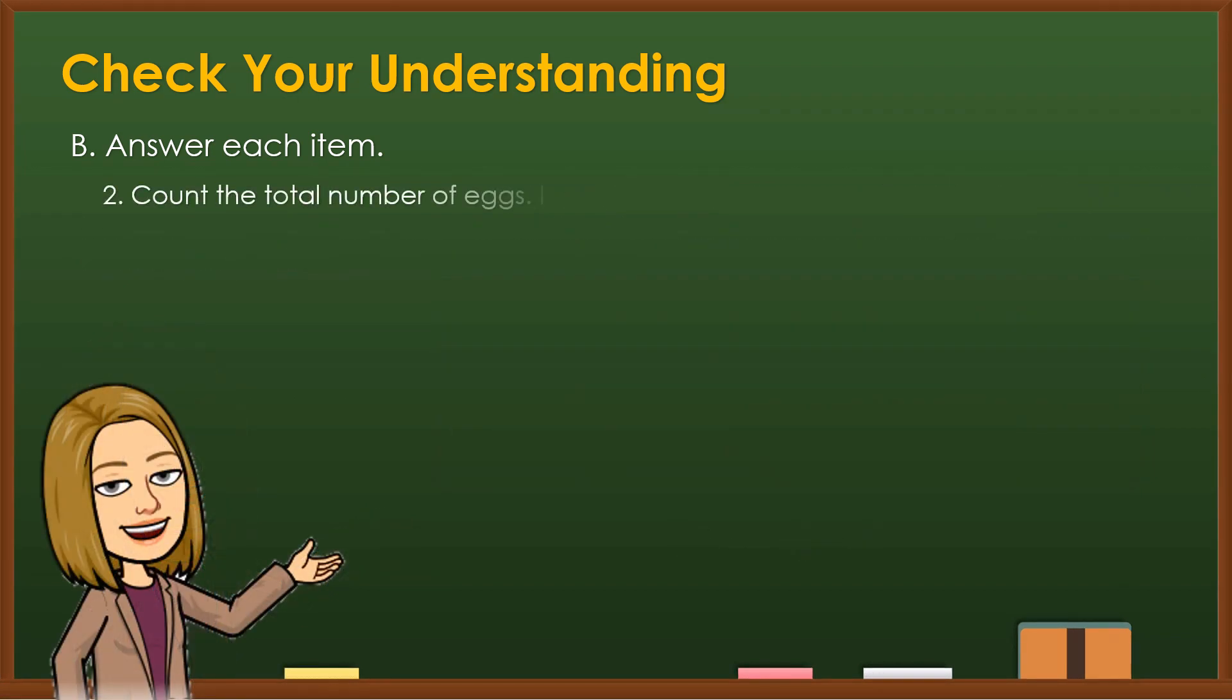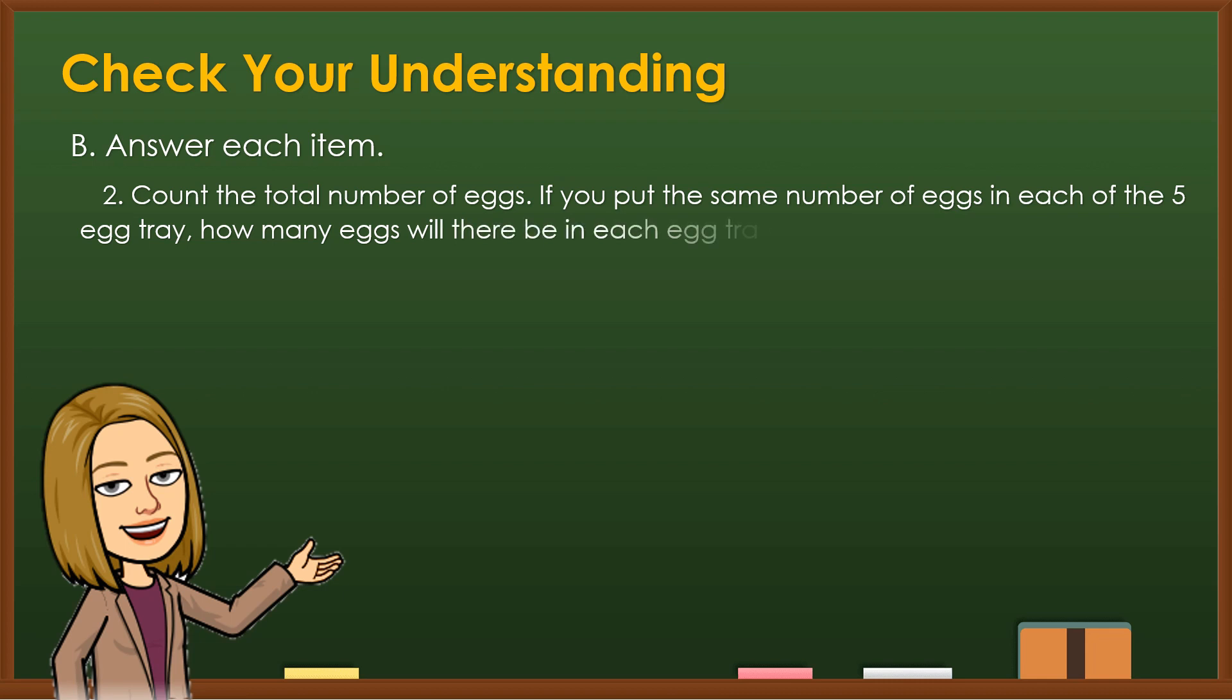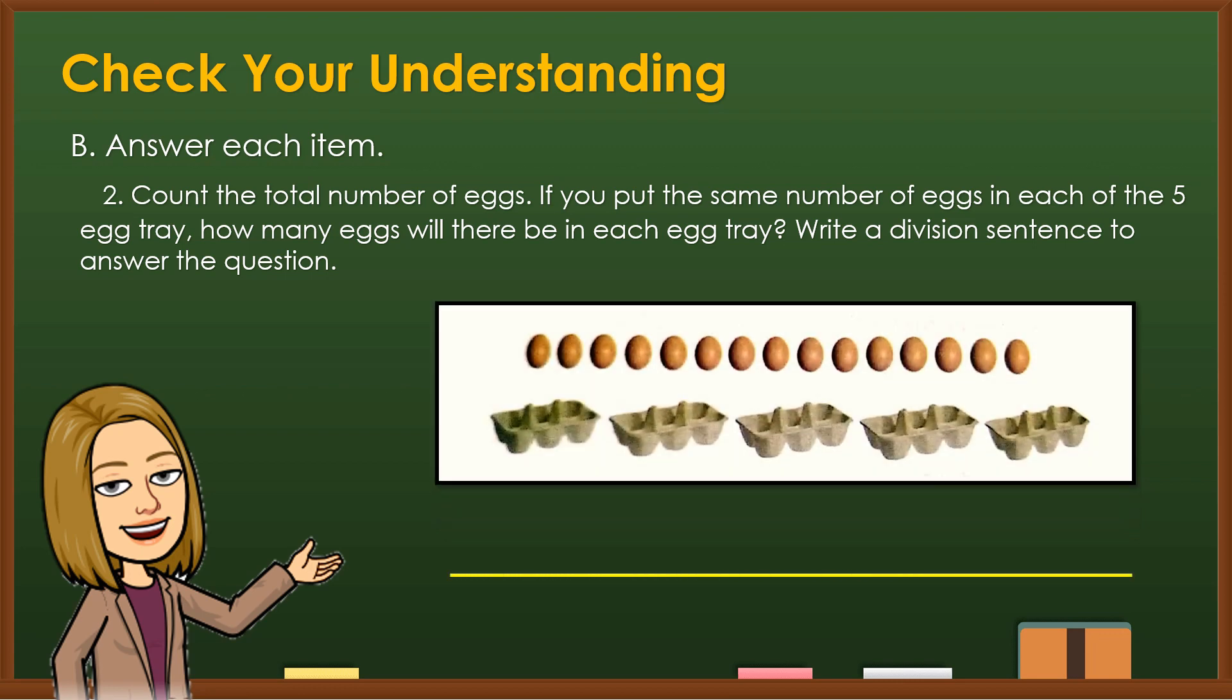Count the total number of eggs. If you put the same number of eggs in each of the 5 egg trays, how many eggs will there be in each egg tray? Write a division sentence to answer the question. 15 divided by 5 is equal to 3. Therefore, there are 3 eggs in each egg tray.